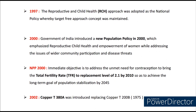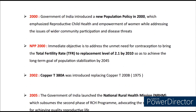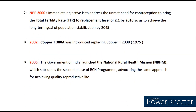In 2000, the new population policy was introduced by the Government of India, with the main objective to address the unmet need of contraception and to bring the TFR to replacement level of 2.1 by 2010. In 2002, Copper T-380A was introduced, replacing Copper T-200B. In 2005, the Government of India launched the National Rural Health Mission, which subsumes the second phase of the RCH program, advocating the same approach for achieving quality reproductive life.